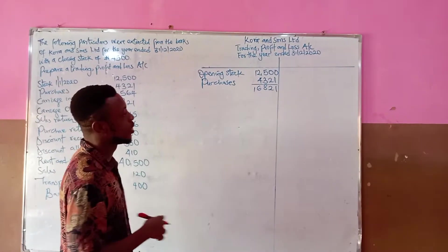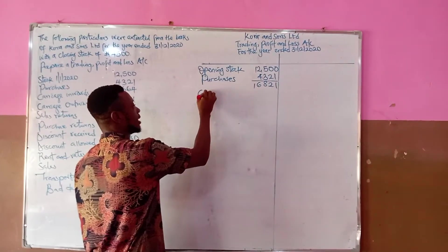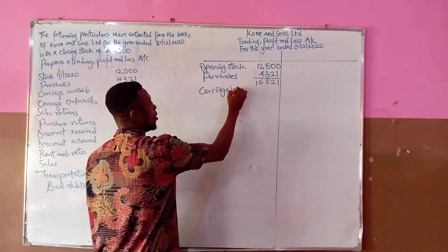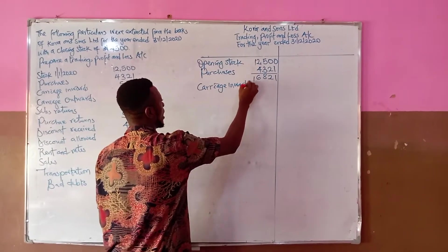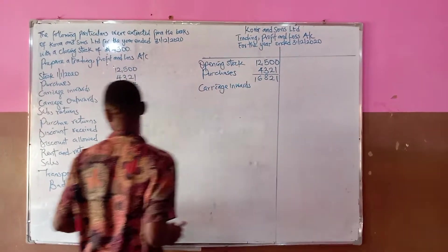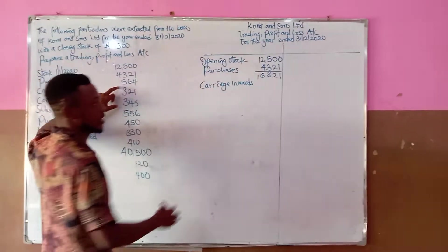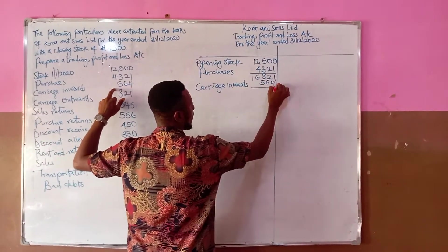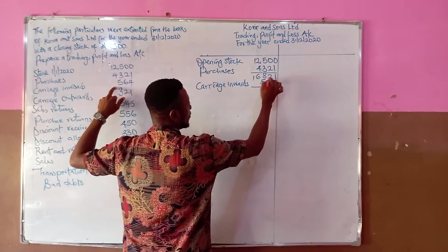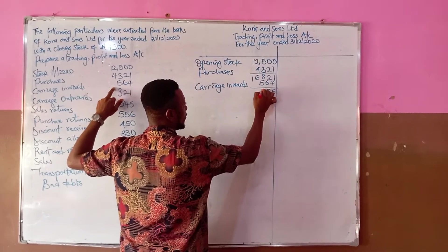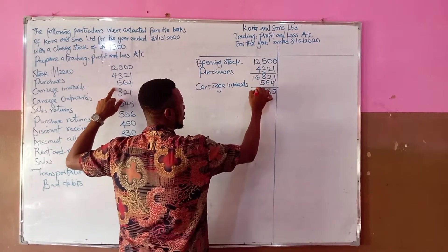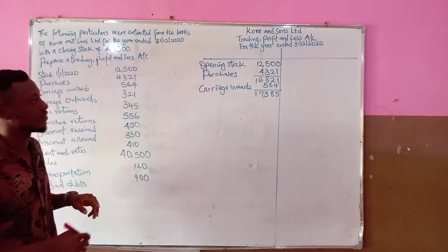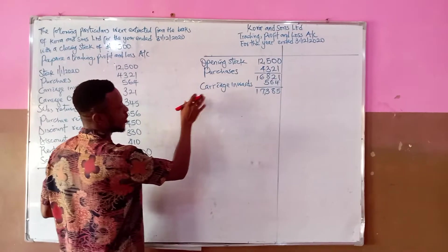We also add carriage inwards, which is the cost of conveying goods from where we purchased them to our premises. Carriage inwards is 564, bringing our running total to 17,385.